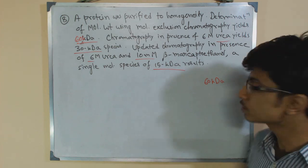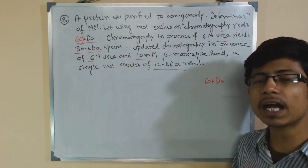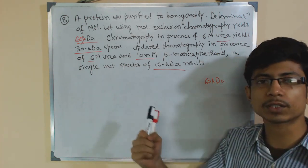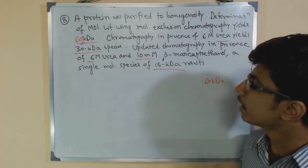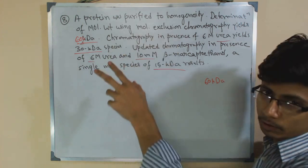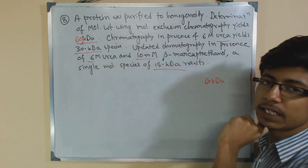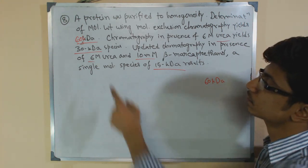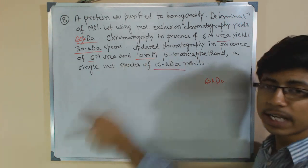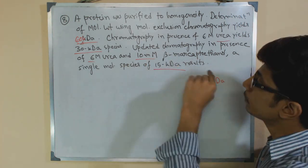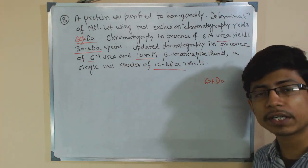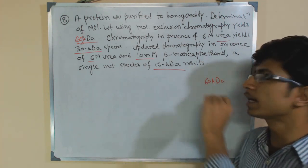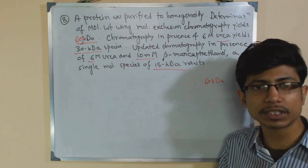So after we denature the 60 KD protein with urea, we get a 30 KD species. Urea denatures it from the core, separating all those units apart. Then, in the updated chromatography, they conduct the same run in presence of 6 molar urea along with 10 millimolar beta-mercaptoethanol. Beta-mercaptoethanol is a very important ingredient — it disrupts disulfide bonds because it acts as a reducing agent.